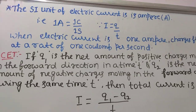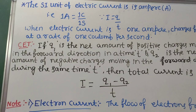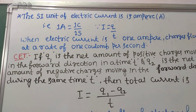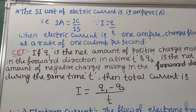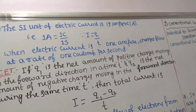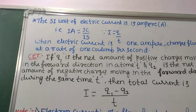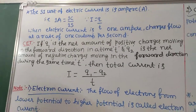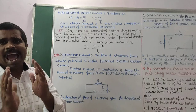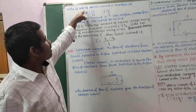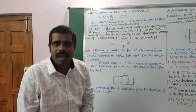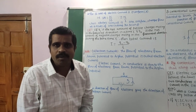We know that I is equal to Q divided by T. And hence we can say 1 ampere is equal to 1 coulomb per second. The SI unit of electric current is ampere, denoted by capital A. 1 ampere is equal to 1 coulomb per second.